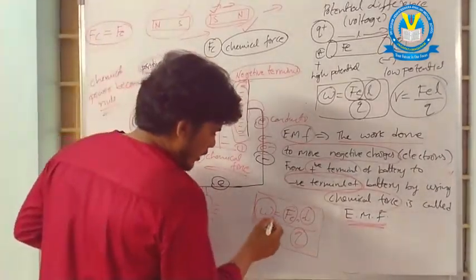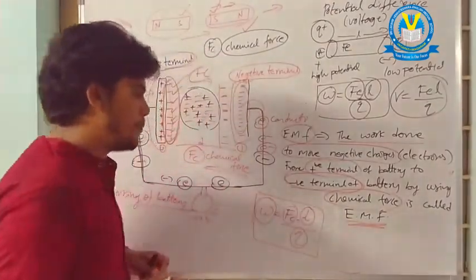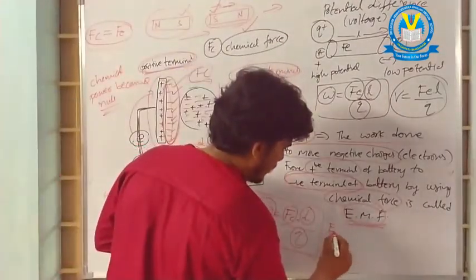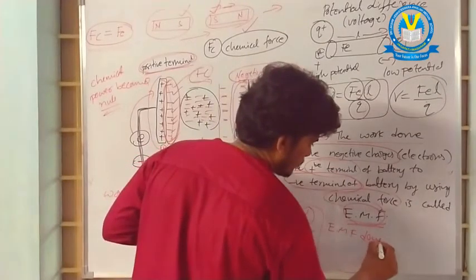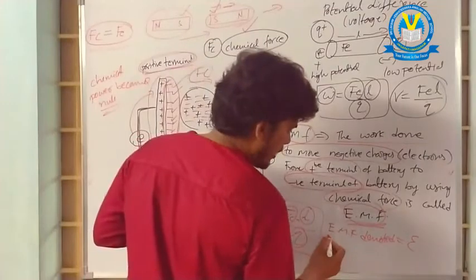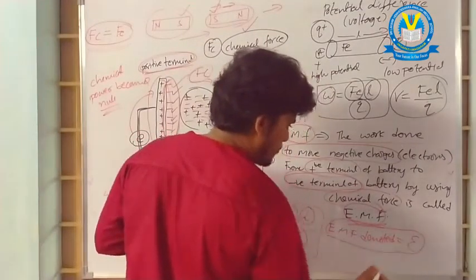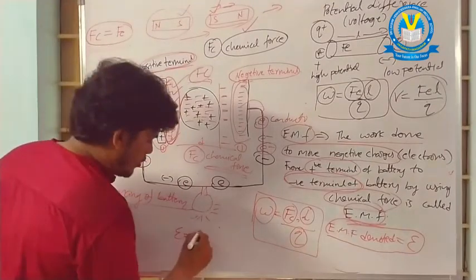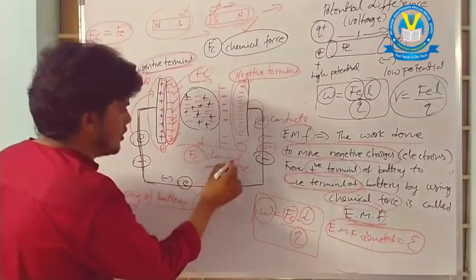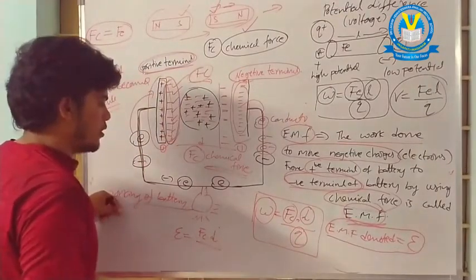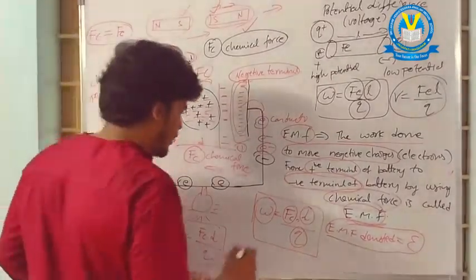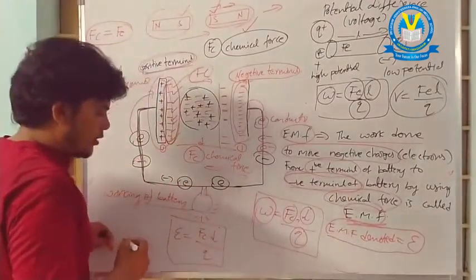Work done by a charge using chemical force is the electromotive force. Electromotive force is denoted with the symbol epsilon (ε). The formula is: epsilon equals the chemical force Fc multiplied by distance D, divided by charge Q. So ε = Fc × D / Q.